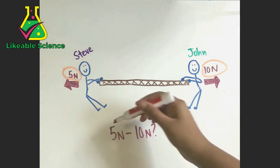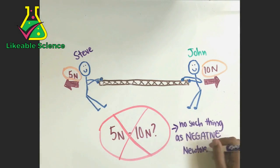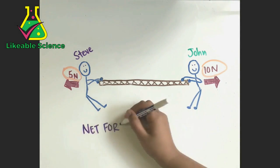There's no such thing as negative newtons, so our setup can't be 5 newtons minus 10 newtons. It has to be the other way around to get a positive answer.